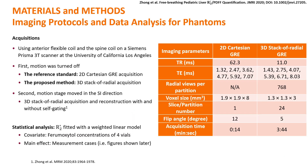Motion phantoms were imaged using a Siemens 3T scanner at UCLA. First, the motion was turned off; the reference 2D Cartesian GRE acquisition was performed, followed by the proposed 3D stack-of-radials acquisition. Then the phantoms were moved in the SI direction, and the 3D stack-of-radials acquisition was repeated and reconstructed without and with self-gating. For statistical analysis, R2-star values of the four vials were fitted with a weighted linear model.